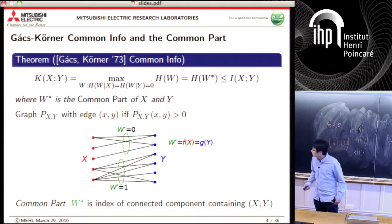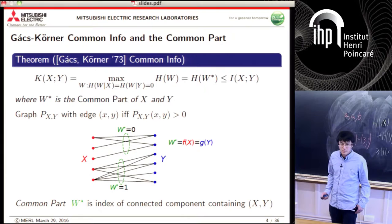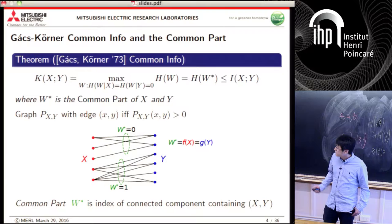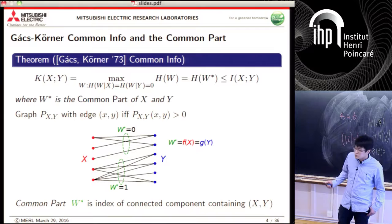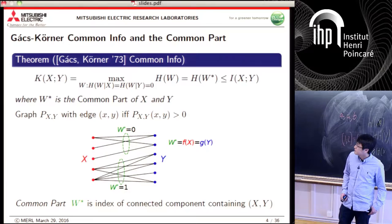The common part of X and Y is defined via a graph representing the joint distribution, where you place an edge whenever the joint probability is positive. You'll have one or more connected components, and the common part W* is just the index of the connected component containing the realization of X and Y. This common part is a deterministic function of X and also a deterministic function of Y, and Gács-Körner common info is just the entropy of this common part random variable.